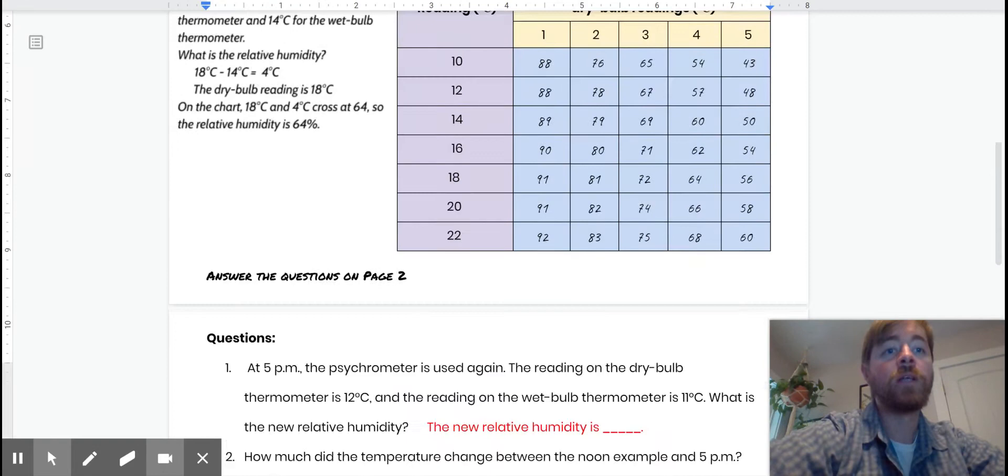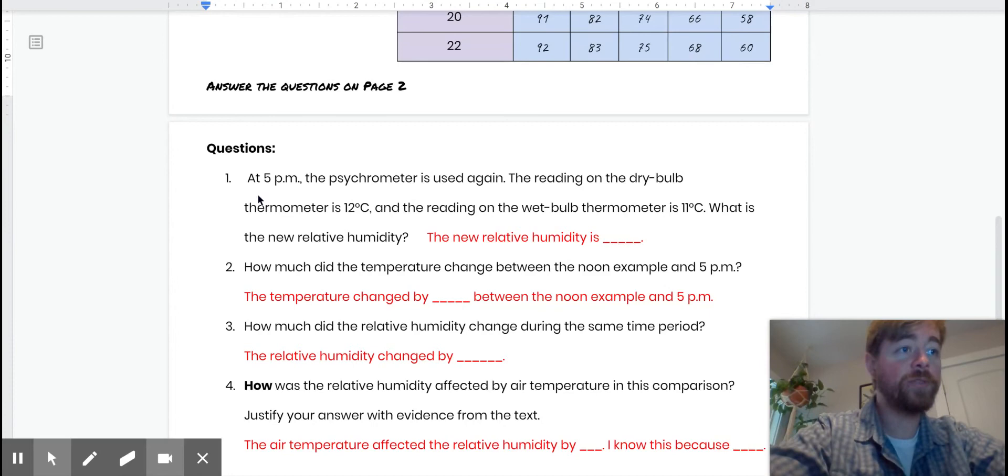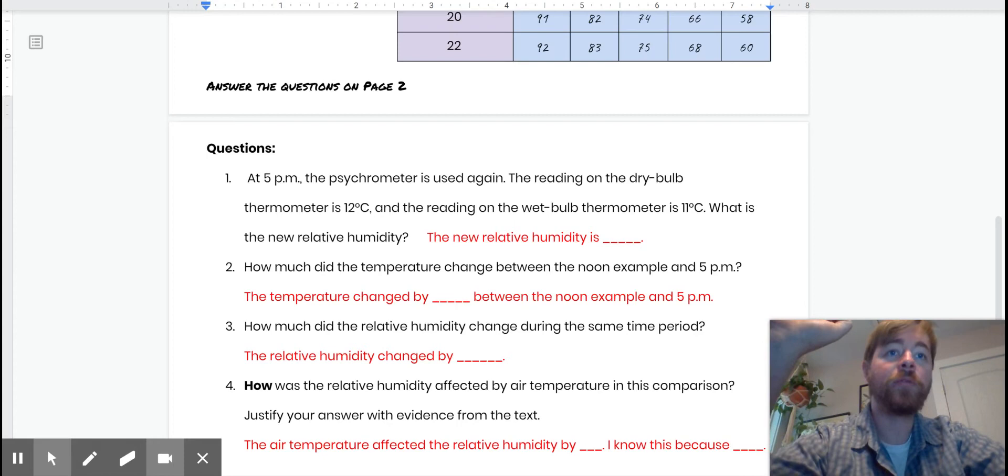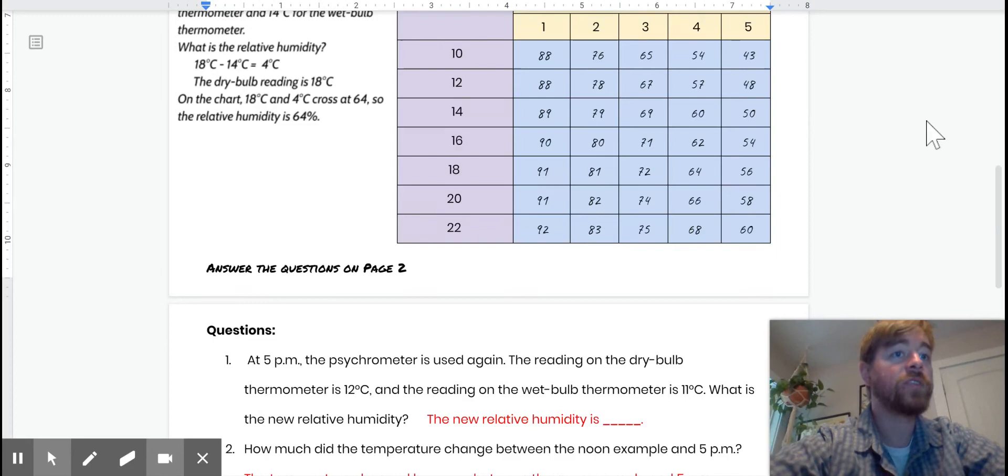Let's look at our questions. Question number one, at 5 PM, remember our example was from noon, the psychrometer is used again. The reading on the dry bulb thermometer, the actual air temperature, is 12 degrees Celsius, and the reading on the wet bulb thermometer is 11 degrees Celsius. What is the new relative humidity? So we follow our steps again. We subtract 12 minus 11 to get our difference. We look at what the actual air temperature was, 12 degrees Celsius, and then we find our percent using the table.